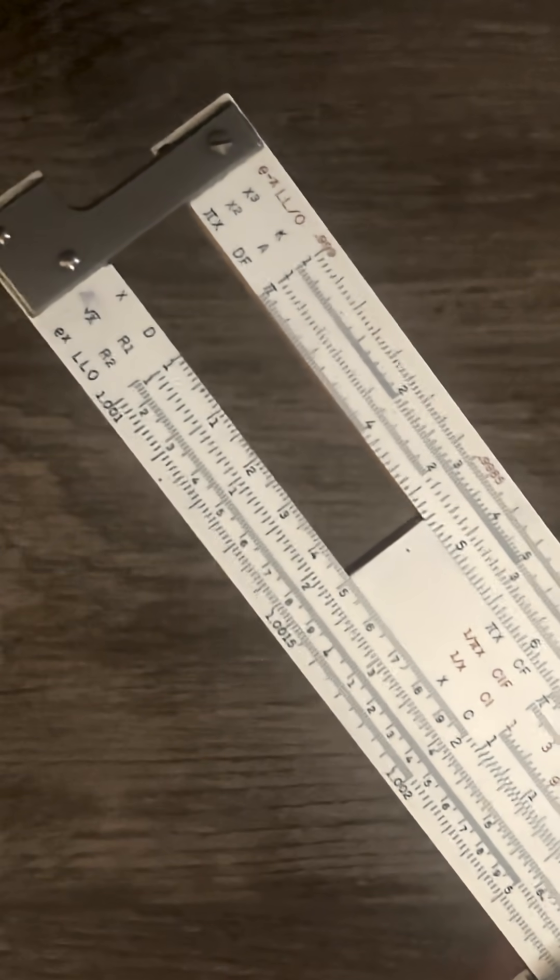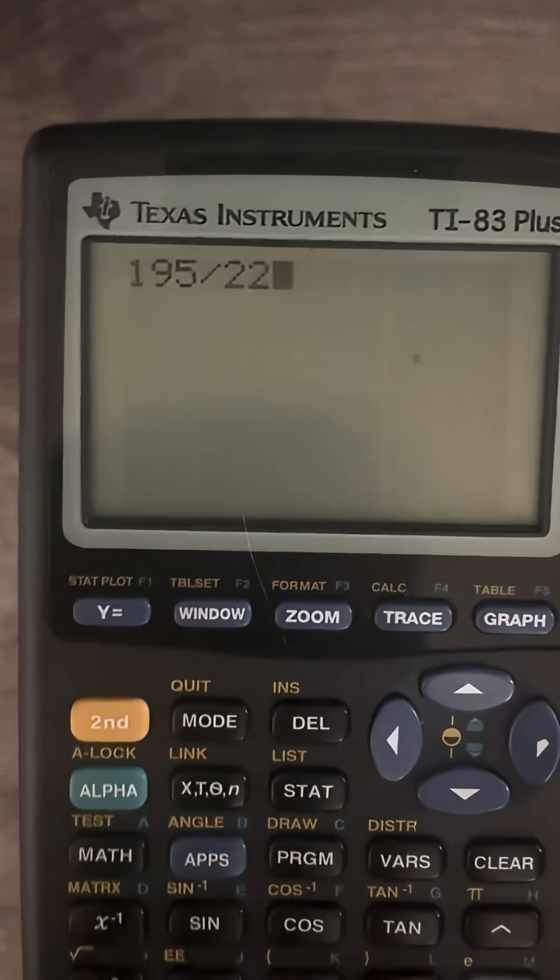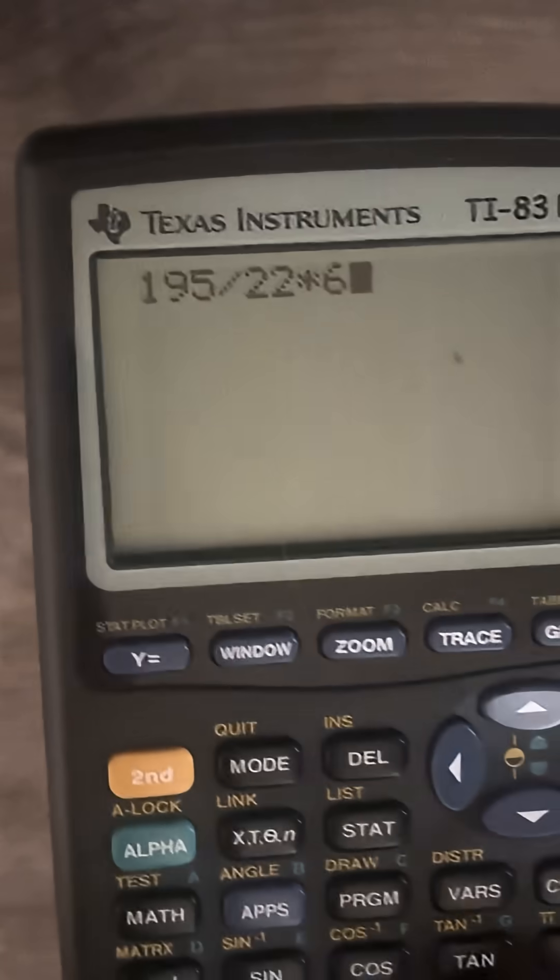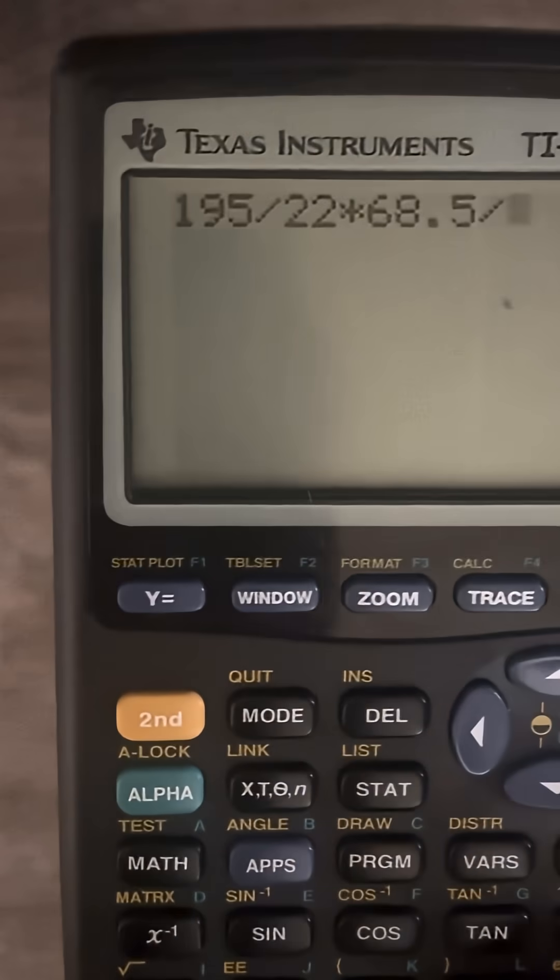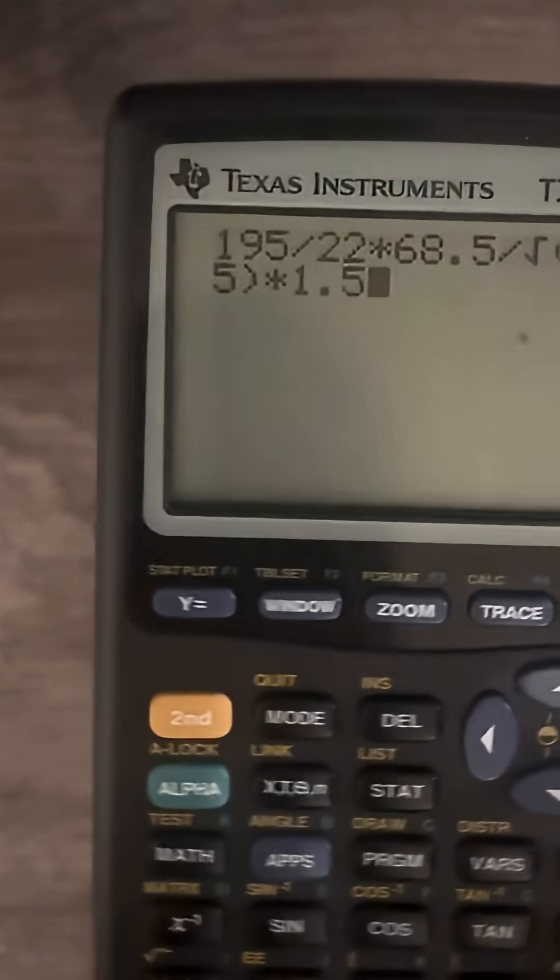Okay guys, we'll do one more chain operation on the slide rule. This time we'll go with 195 divided by 22 times 68.5 divided by square root of 8.5 times 1.5.